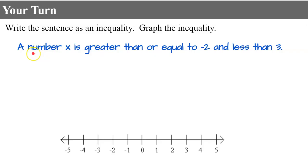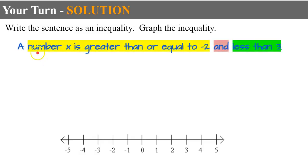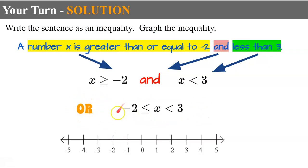Your turn. I would like you to write the sentence in blue as an inequality and then graph it: a number x is greater than or equal to negative 2 and less than 3. Please pause and come back when you're ready. Welcome back. So our first inequality is x greater than or equal to negative 2. It's an AND compound inequality, and our second is x less than 3.